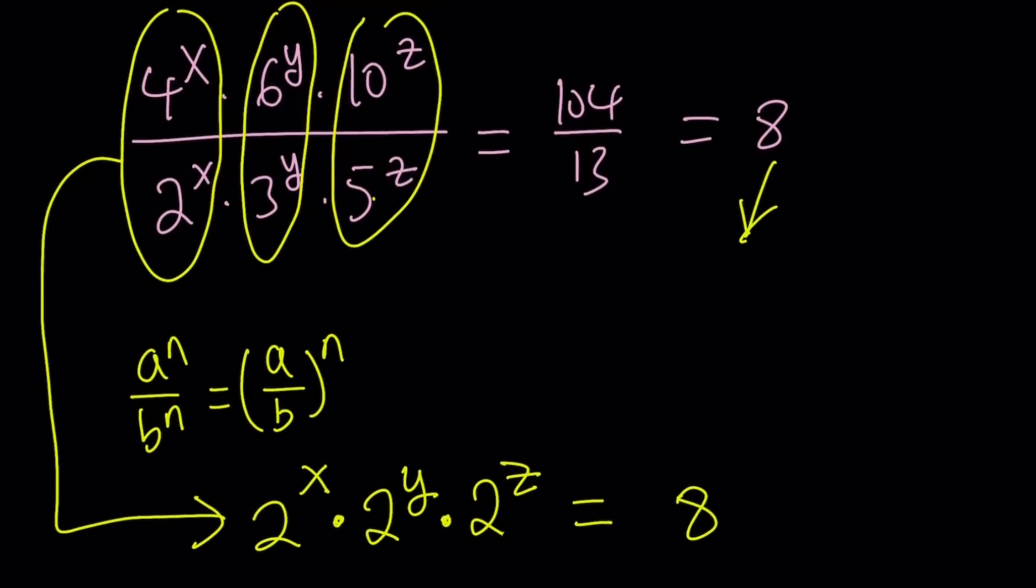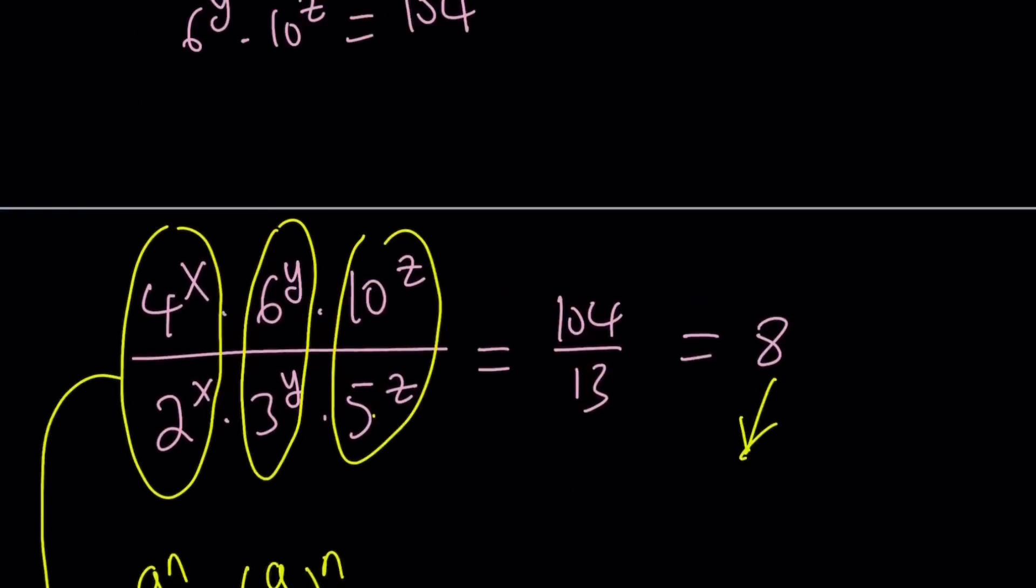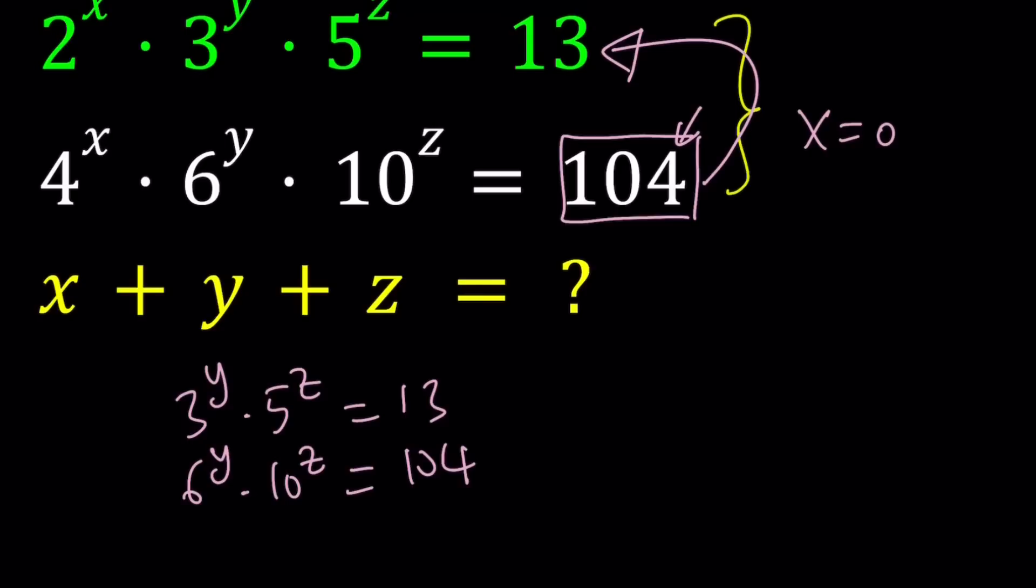Now, we have the same base, so we can go ahead and add the exponents. We couldn't have done that earlier because notice that in the original expression, the bases and the exponents were all different, so there was no way of combining these exponentials together, right?